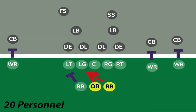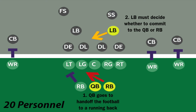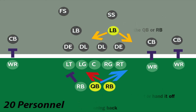On read option plays, the quarterback starts by going to hand off the football to a running back. When he does this, an opposing linebacker or defensive end then has to react, choosing whether to move toward where it looks like the running back will go or to hesitate and follow the quarterback. The quarterback reads this defensive player and based on that reaction, will then decide whether to complete the handoff to the running back or keep the ball and run up the field himself.